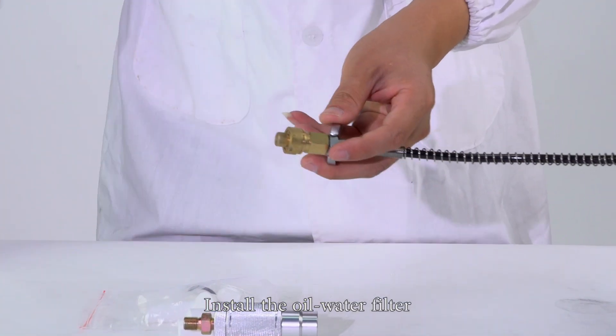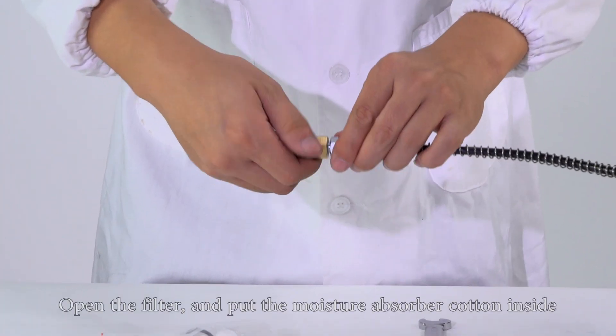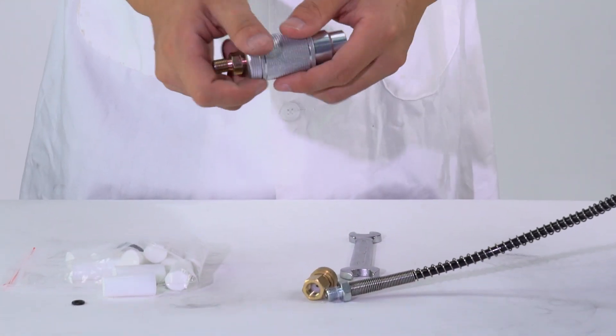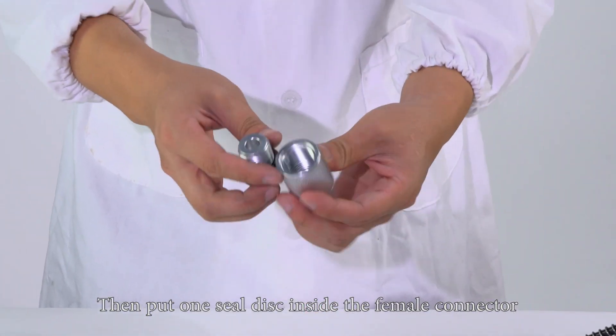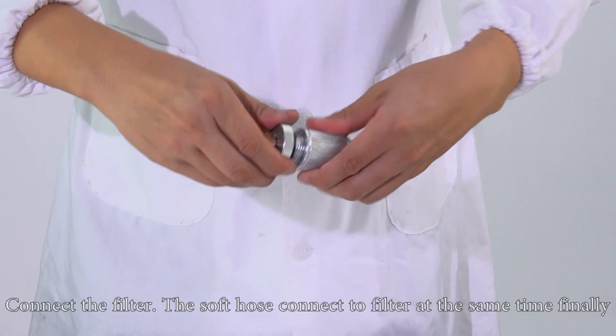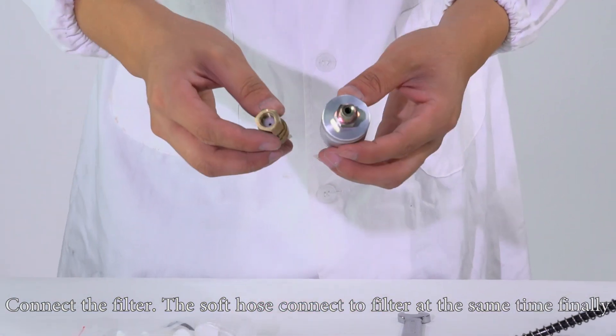Install the oil water filter. Disconnect the soft hose and female connector. Open the filter and put the moisture absorber content inside, then put one sealed disc inside the female connector. Connect the filter. The soft hose connects to the filter at the same time finally.